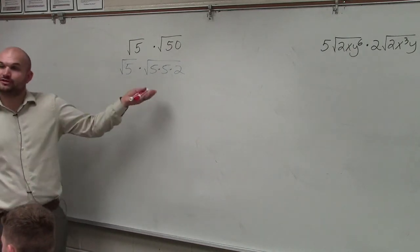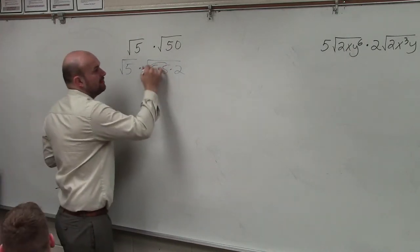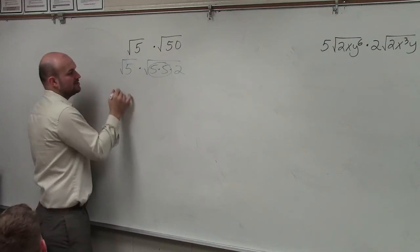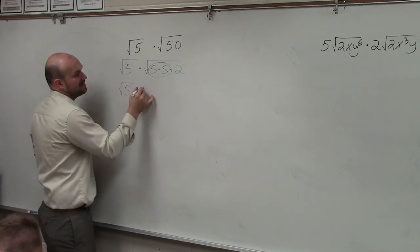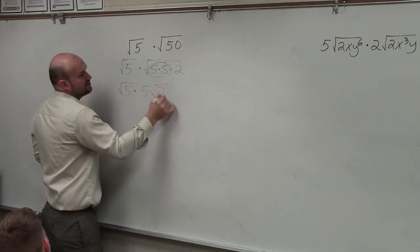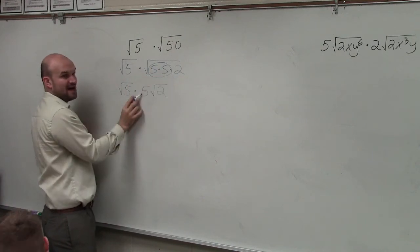Now I see that when I'm taking the square root, I can only take the square root of a number multiplied by itself. So now I have the square root of 5 times 5, square root of 2, because the square root of 5 times 5 is 5.